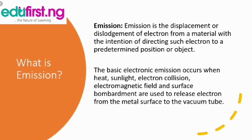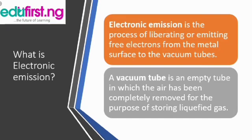What is electronic emission? Electronic emission is the process of liberating or emitting free electrons from a metal surface to vacuum tubes. A vacuum tube is an empty tube in which the air has been completely removed.